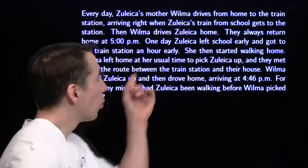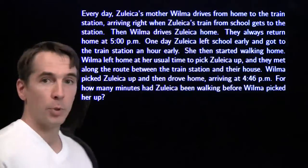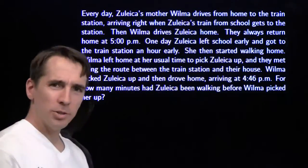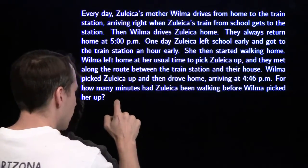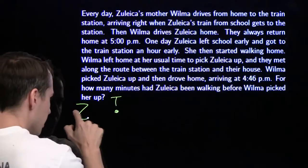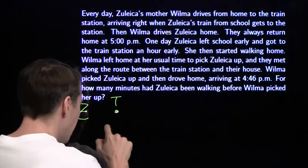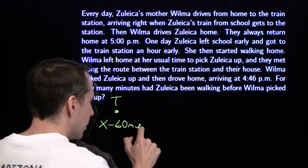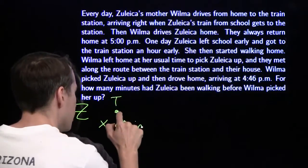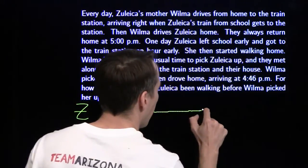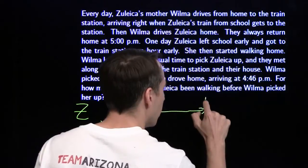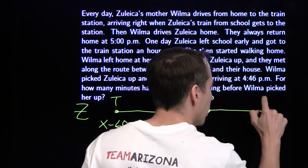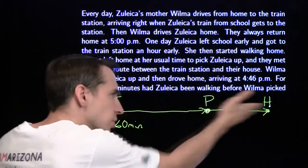We're going to draw a picture of the special day, because the usual day is boring — they meet and get home at 5 PM. On the special day, Zuleika gets to the train station an hour early. Let's say X is the usual pickup time — she gets there 60 minutes early and starts walking home. She walks until she reaches a pickup point P, gets picked up there, gets in the car, and they drive the rest of the way home. That's what Zuleika's day looks like.